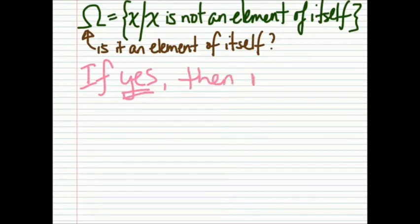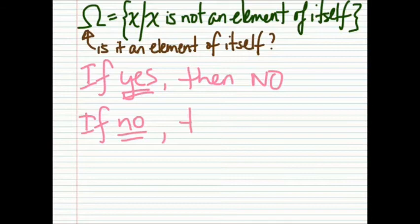If omega is not an element of itself, then it would satisfy the property of not being an element of itself, then it must be an element of omega itself. If no, then yes.